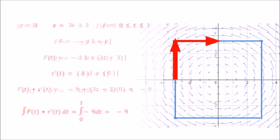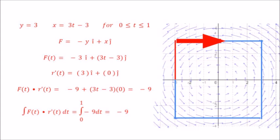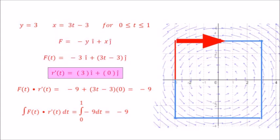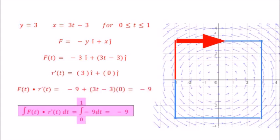Another segment of the path. This time y is a constant, t goes from 0 to 1, and x equals 3t minus 3. At t equals 0, x is negative 3; when t goes to 1, x goes to 0. The field in terms of t gives r prime dot product integral: negative 9. Negative? That's right — displacement is to the right, the field is to the left, so the field does negative work.